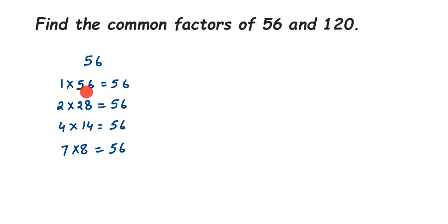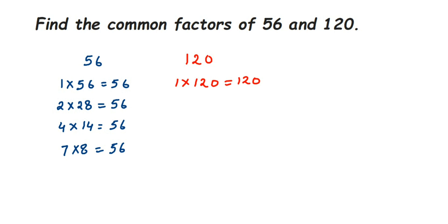This method works well when the number is smaller than 100. For a slightly bigger number like 120, it's not completely applicable but you can still try the same approach. Now let's find the factors of 120 using the same method we used for 56. So: 1 × 120 = 120.